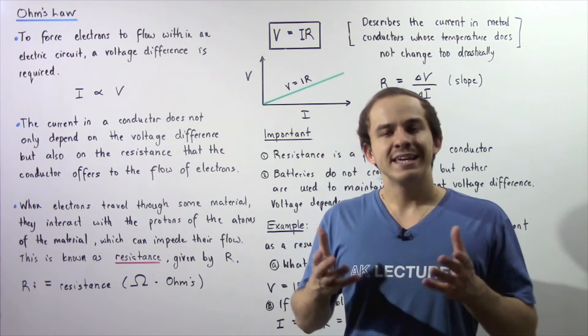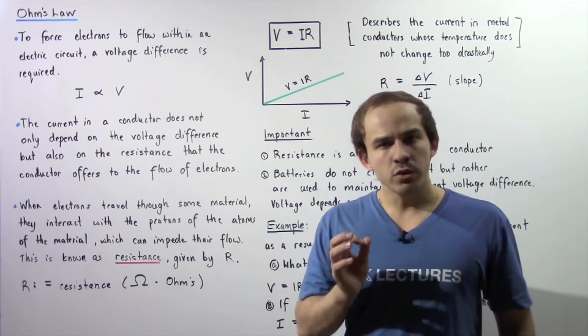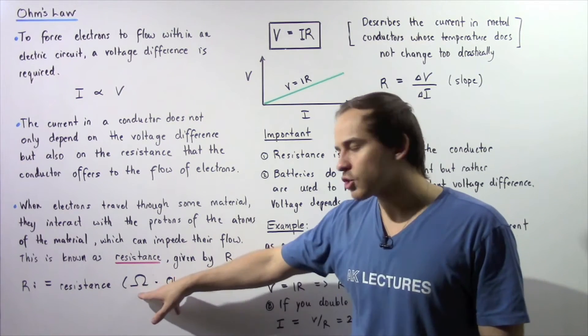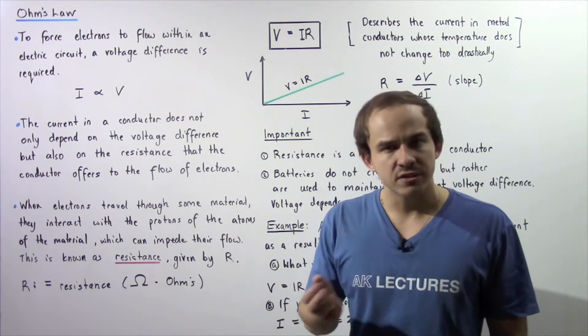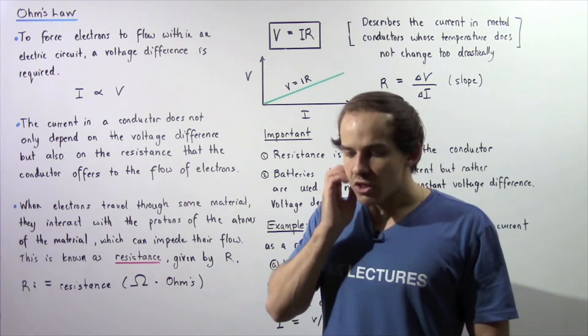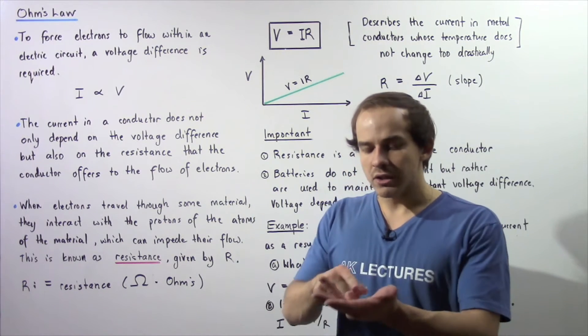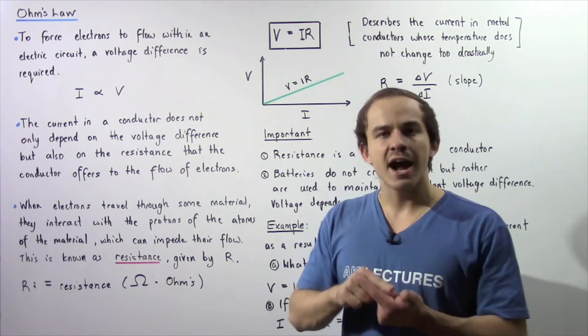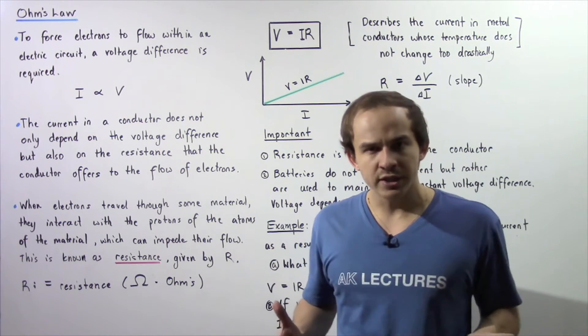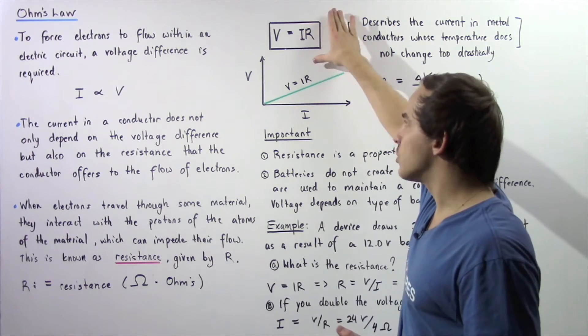Resistance is given by capital R. The units of resistance are given by the Greek symbol Omega, which stands for Ohms. The relationship between the electric current, the voltage, and the resistance of the electric circuit is given by the following equation,